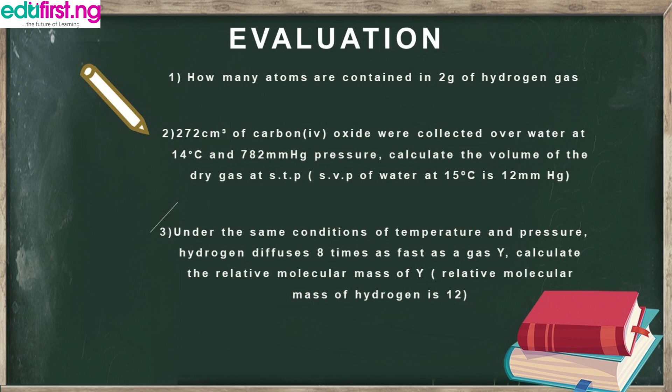Here are your take-home questions. First: how many atoms are contained in 2 grams of hydrogen gas? Second: 27 cm³ of carbon dioxide collected over water at 14 degrees Celsius and 1082 mmHg — calculate the volume of the dry gas at STP, given the SVP of water at 15°C is 12 mmHg. Third: under the same conditions, hydrogen diffuses 8 times as fast as gas Y — calculate the relative molecular mass of Y, given that the relative molecular mass of hydrogen is 2. Use Graham's Law formula and insert the figures. Thank you for today's class.